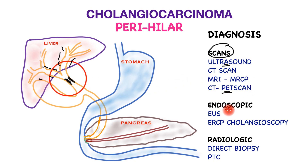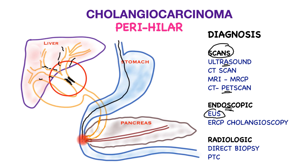Endoscopic ultrasound involves inserting a flexible tube through the stomach into the duodenum, parking it next to the exit point of the bile tubes. This is more effective when bile duct cancers are lower down — the distal cholangiocarcinomas — and less effective for biopsying perihilar cholangiocarcinomas.